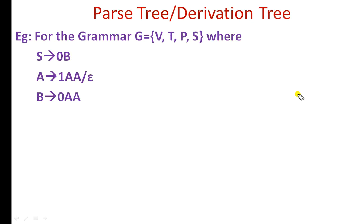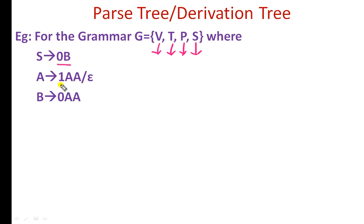Now let us derive the parse tree or derivation tree for the given grammar. The formal definition of the context-free grammar is G = (V, T, P, S), where V represents the set of variables or non-terminals, T represents the set of terminals, P represents the production rules, and S represents the start symbol. The production rules are: S generates 0B, and the root of the tree must be the start symbol S, which generates 0B.